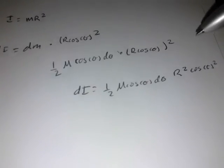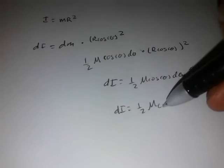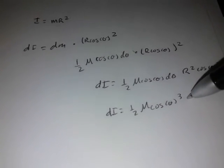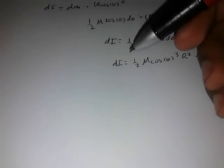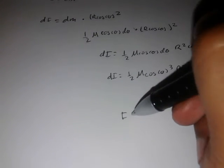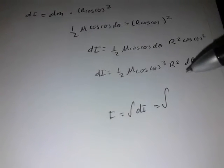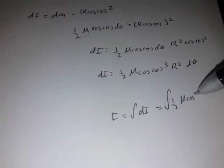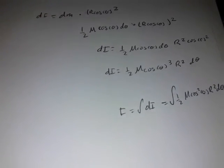Simplifying, dI = (1/2) M R² cos³(θ) dθ. We are now ready to integrate to find the total moment of inertia. Since M, R², and 1/2 are constants, we pull them outside the integral: I = (1/2) M R² × ∫ cos³(θ) dθ.